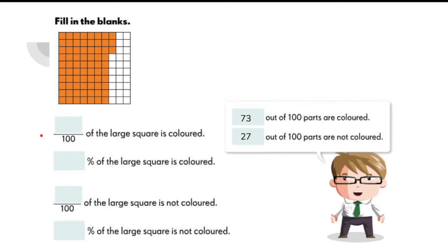Blank of the large square is colored. The answer is 73 out of 100 is colored, and this is also equal to 73%. Now what about the parts that are not colored? It's 27 over 100 or simply 27%.